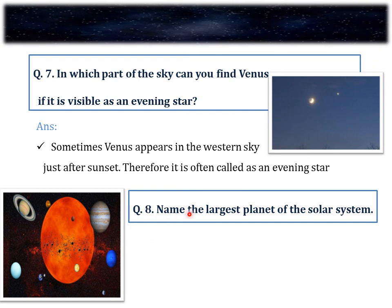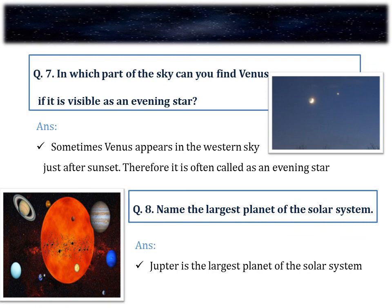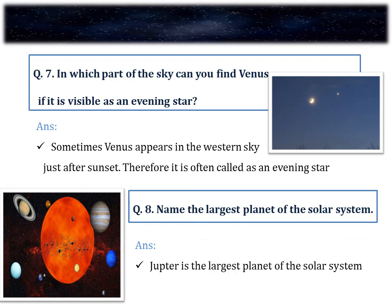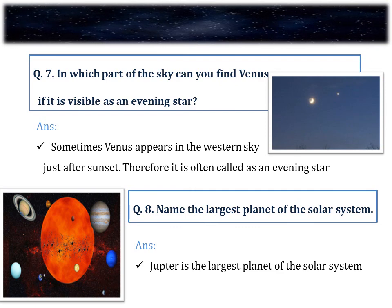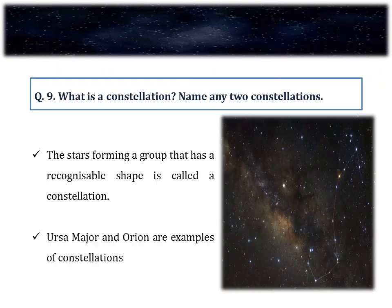Question number 8. Name the largest planet of the solar system. Jupiter is the largest planet of the solar system. It is so large that about 1,300 Earths can be placed inside this giant planet.